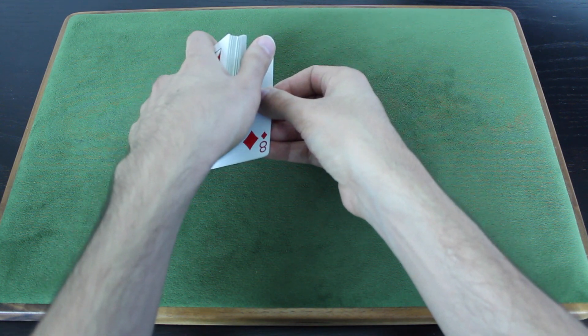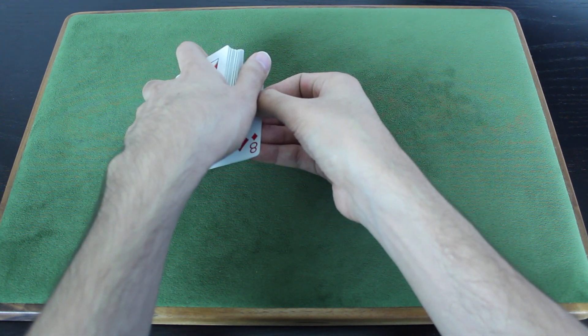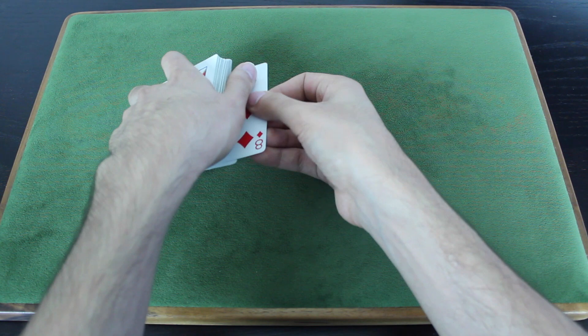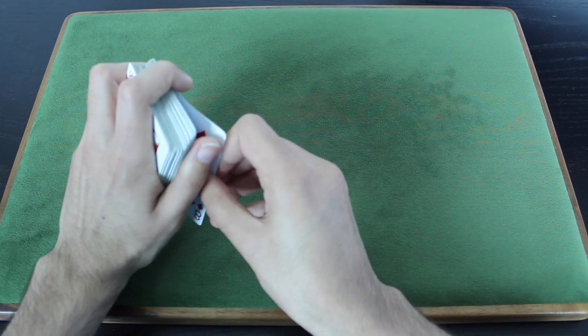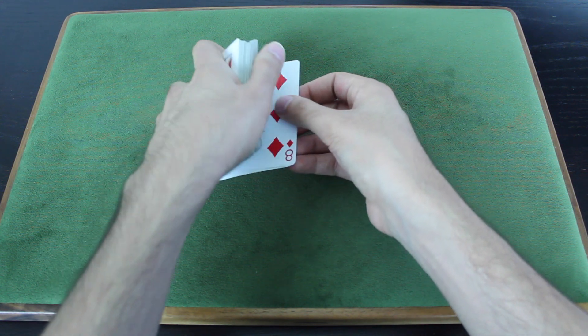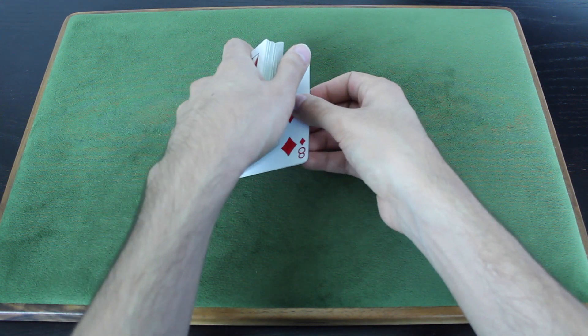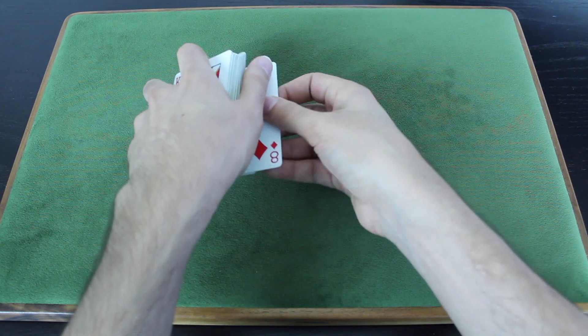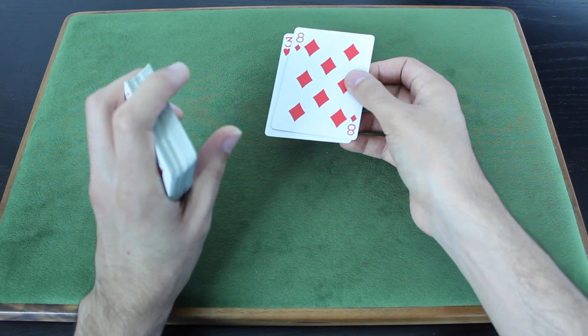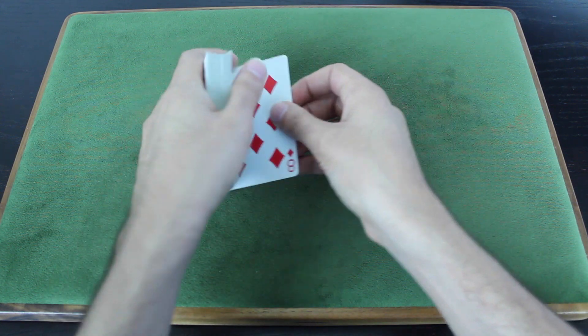And when you're right about here, this is where I start to slide the eight of diamonds out. So I start to slide it out. But nothing can be seen. This is actually very close to an angle-proof move if you do it properly with the right timing. So I slide that card out. Sometimes I'll even out-jog it a little bit. My first finger stays curled around the front edge of the deck. That helps a lot.